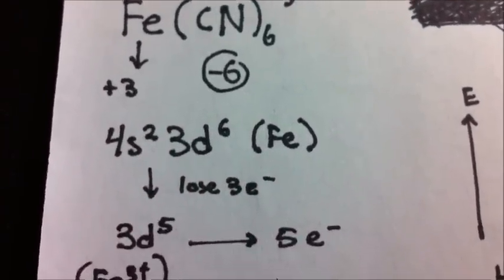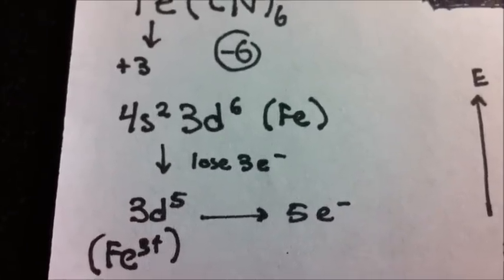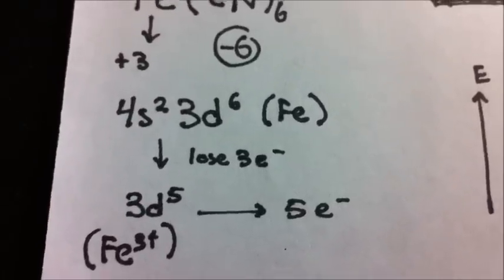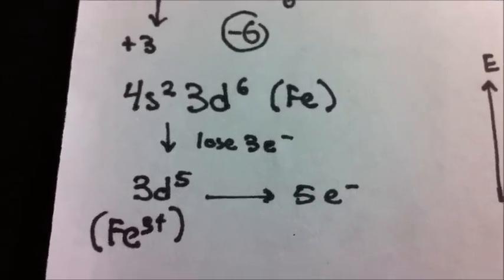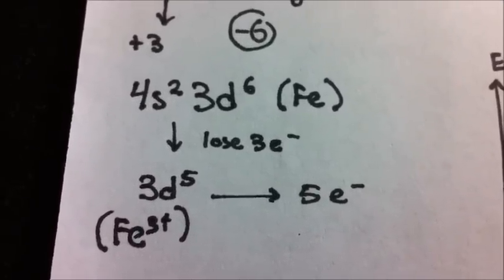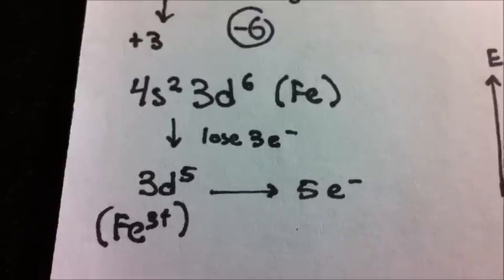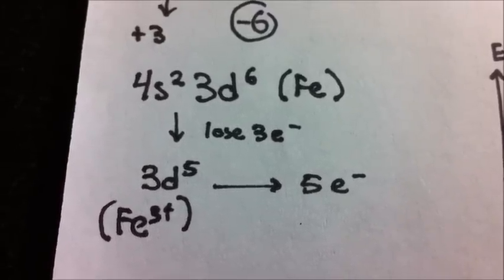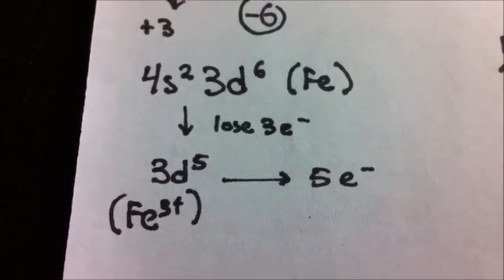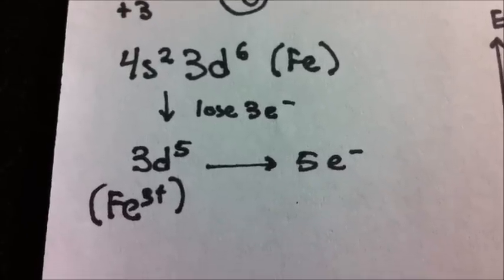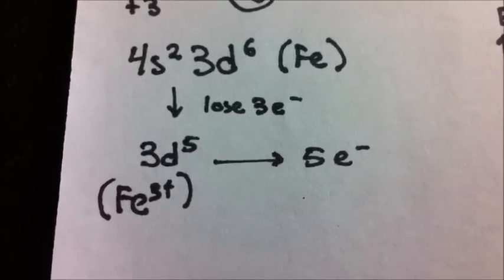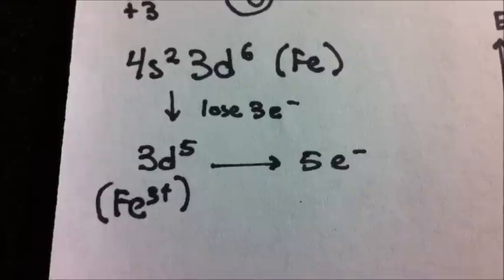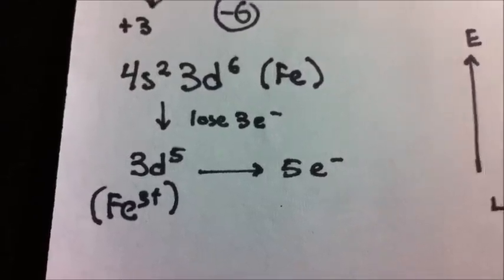To form our ion, we're going to have to lose 3 electrons. We take electrons away from the higher orbital value first, so we take 2 away from our 4s², dropping down to 3d⁶ alone. Then we take away one more for a total of 3 removed, giving us 3d⁵ — the electron configuration for our ion, meaning there are 5 electrons to fill in.